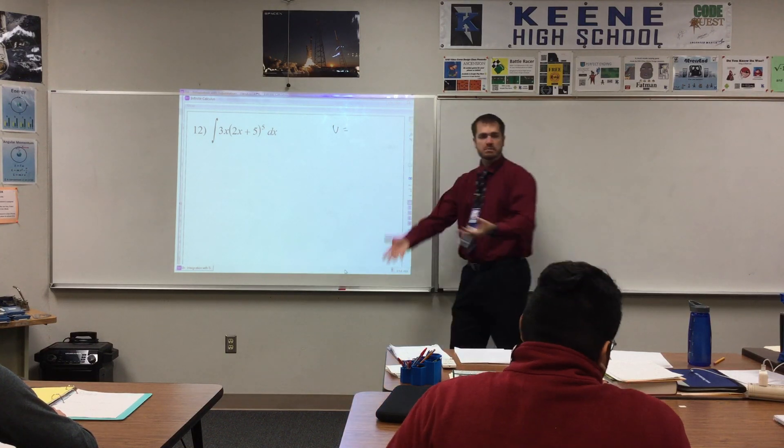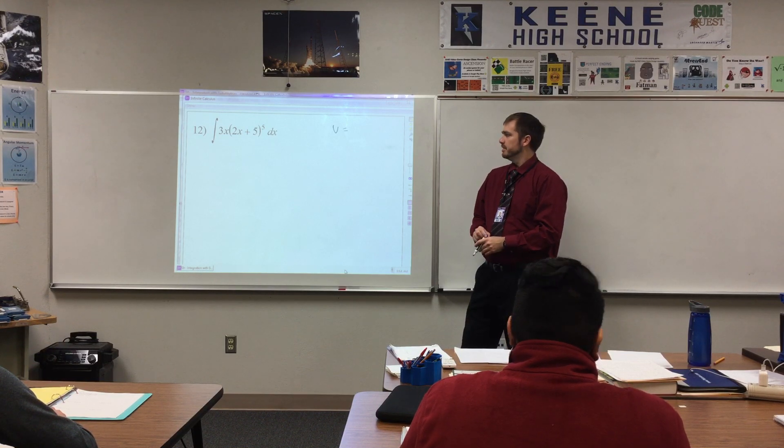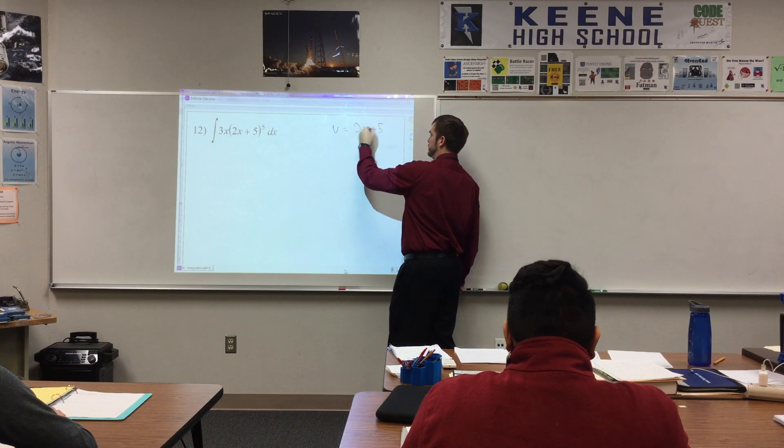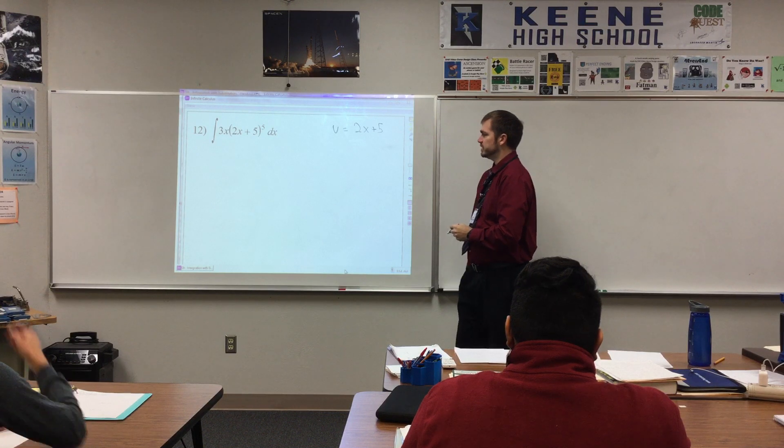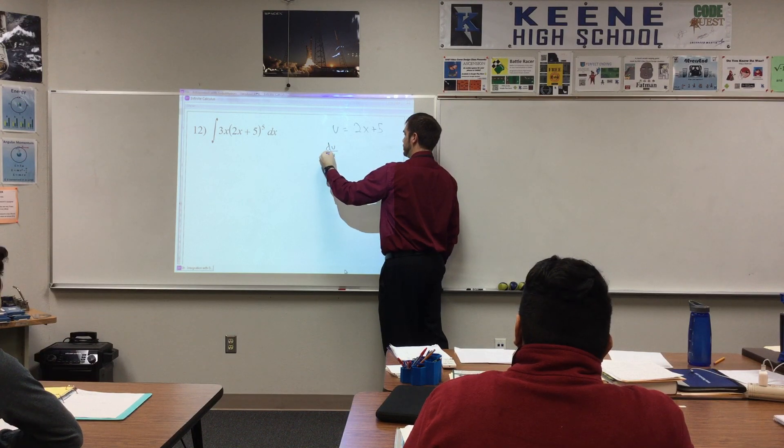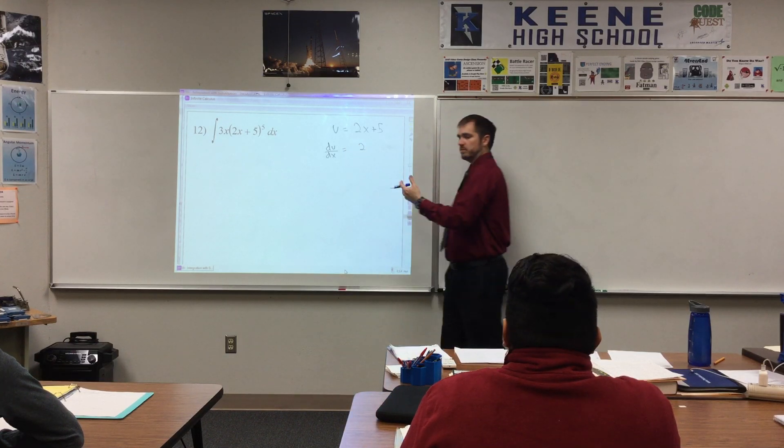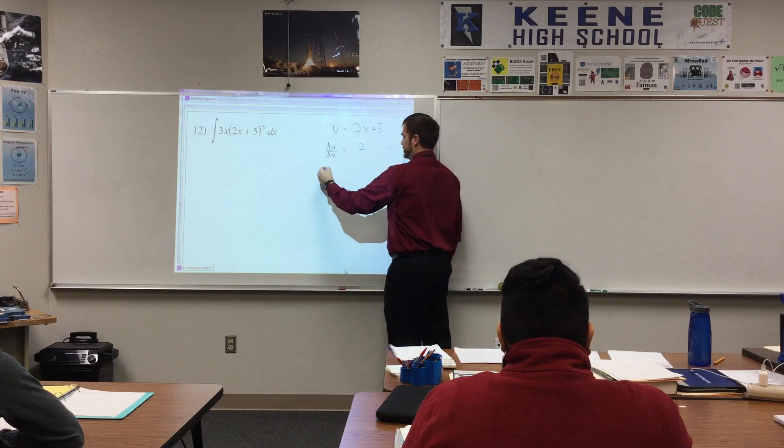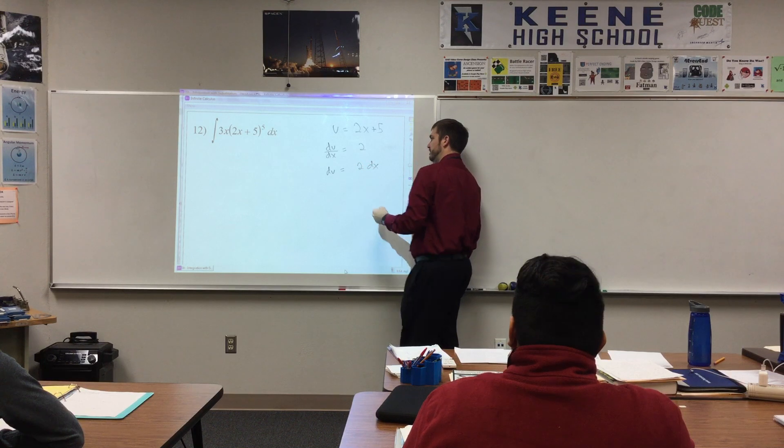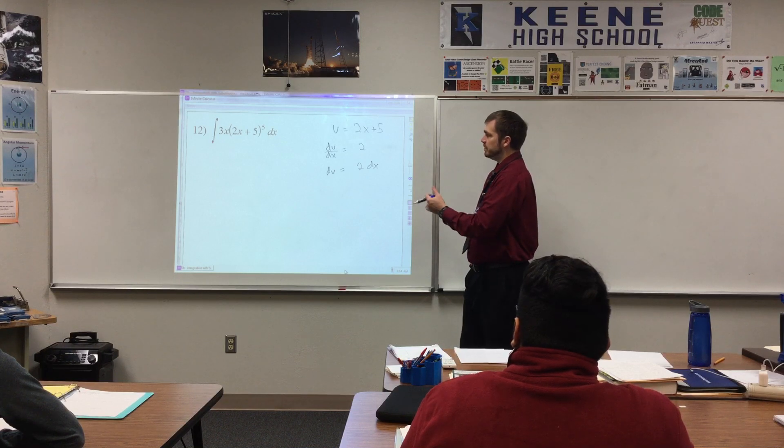So instead what we'll do is we'll find an interesting u here. So we'll say u equals, and I'm open to suggestions. Anyone who's a little bit experienced now, but I know it's been a weekend. 2x plus 5. 2x plus 5 is actually a good substitution value. My experience gives you a thumbs up on that one. So I say u equals 2x plus 5. The next step in the process was always to take the derivative with respect to x. So du over dx equals 2. Then we're going to try to get that dx over here so we can say du equals 2 dx.